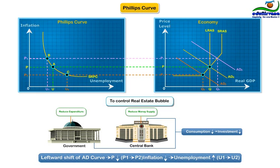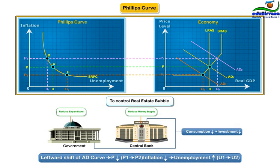The overall conclusion is that shifts in aggregate demand push inflation and unemployment in opposite directions in the short run. This is the relationship illustrated by the Phillips curve. The line joining points A, B, and C on the left-side graph is called the short-run Phillips curve, or SRPC.